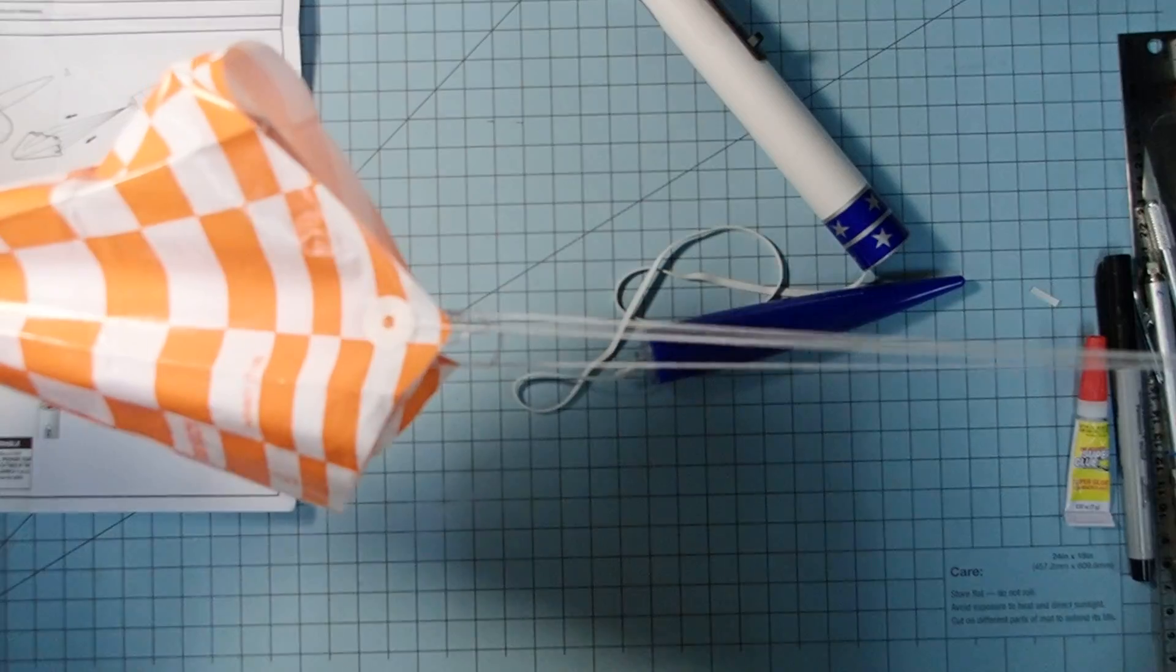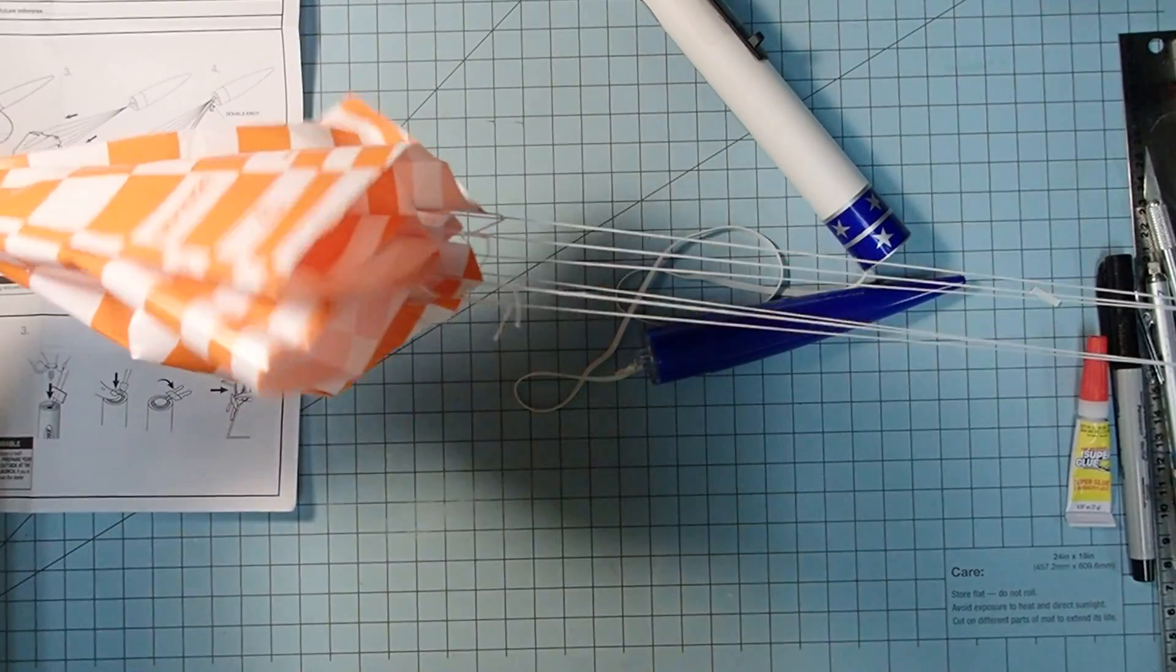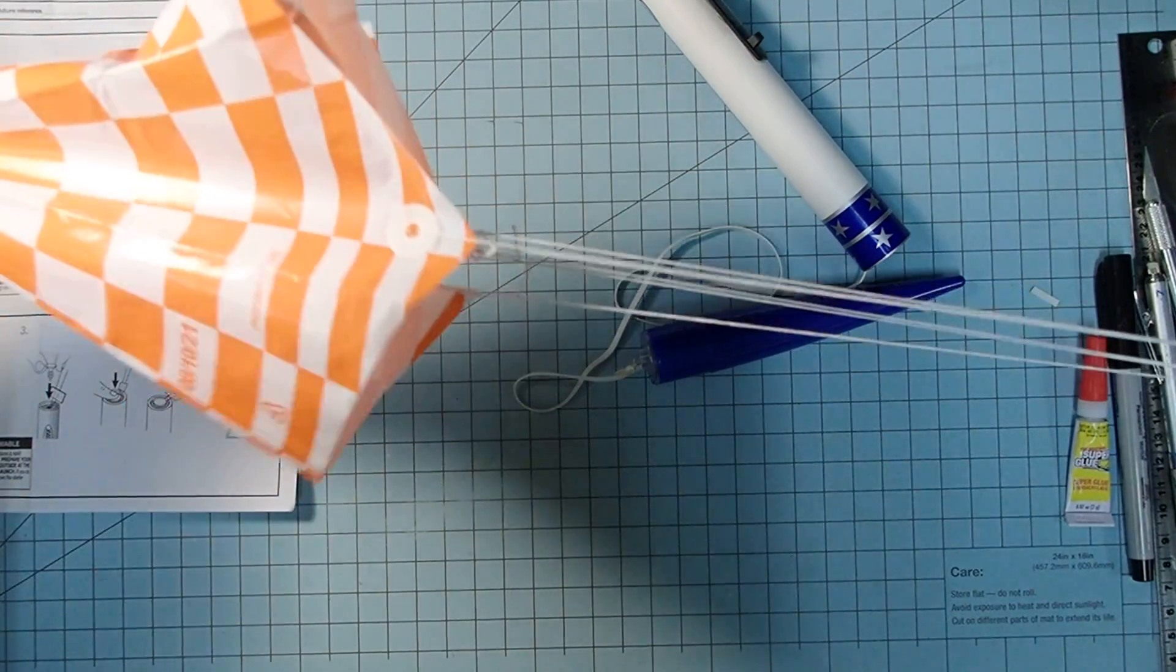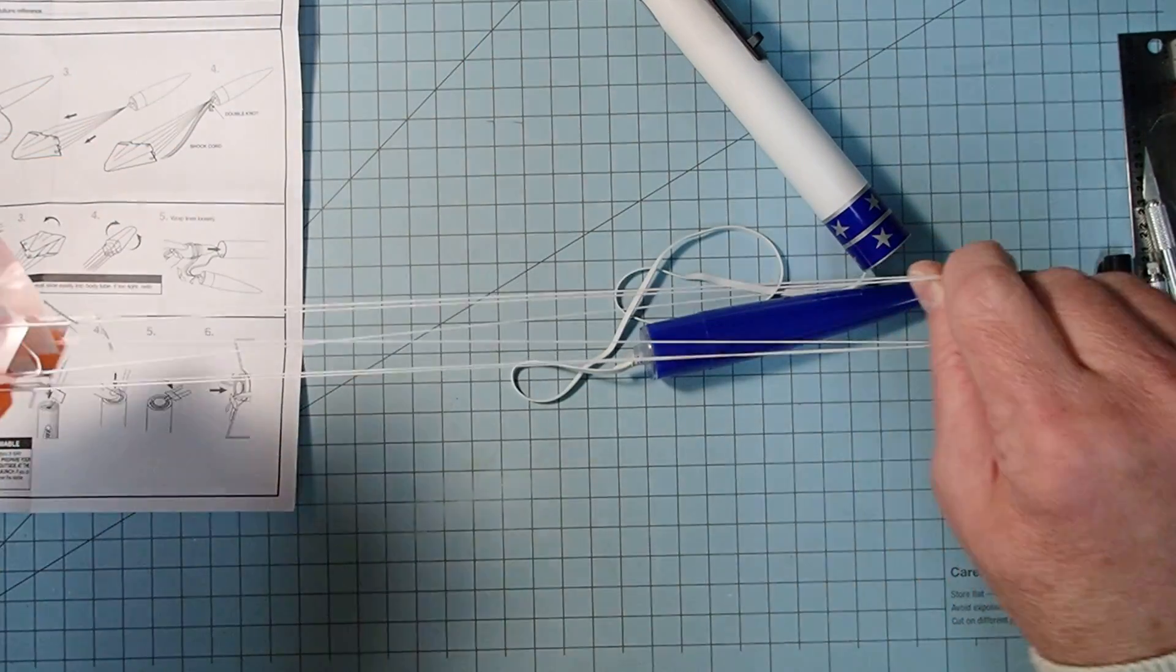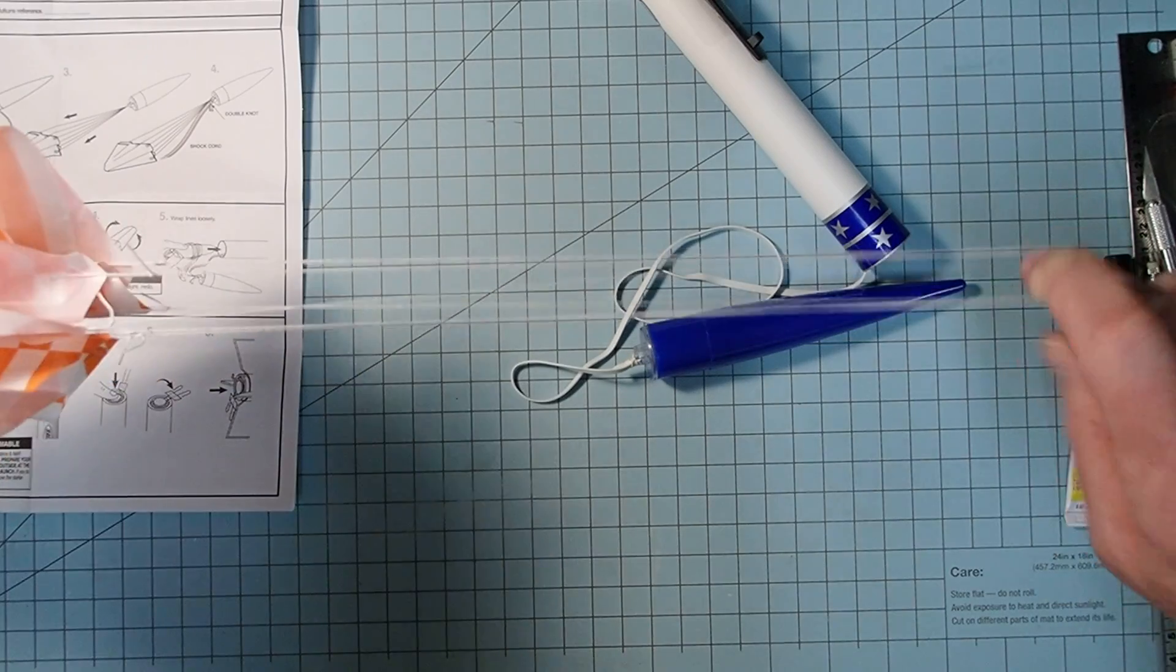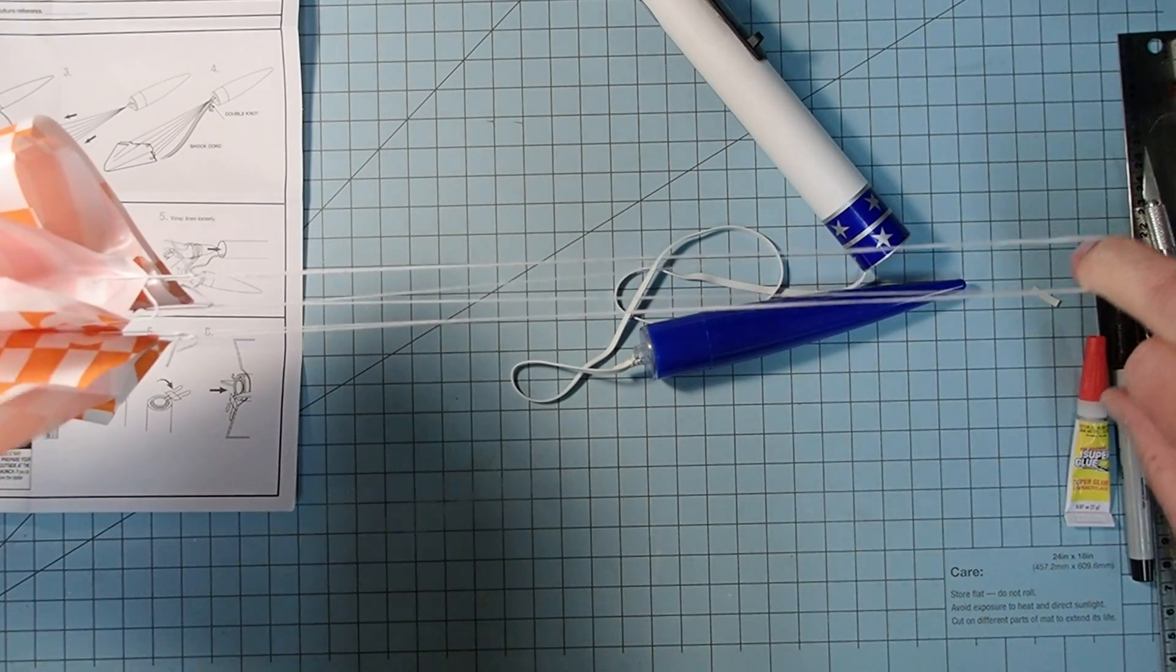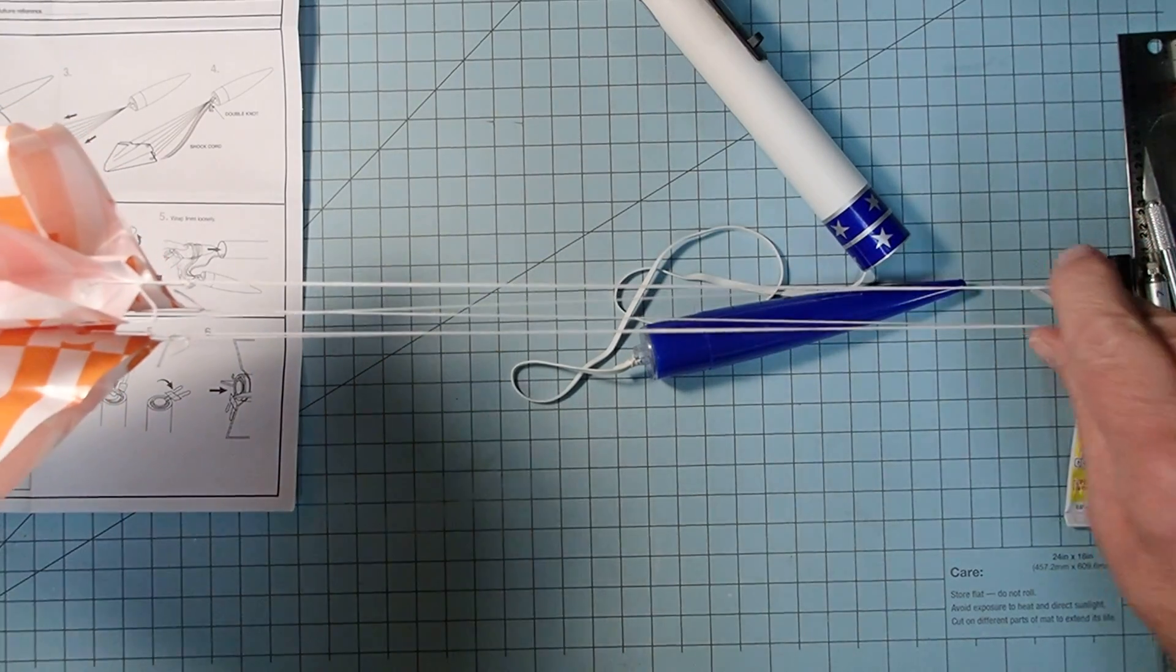All right, and all of these corners of the parachute should get pretty close to meeting each other there. And if they don't, you can simply adjust the shroud lines as they go around your finger here until you get that as even as you can.